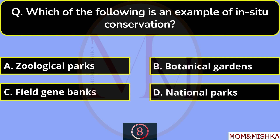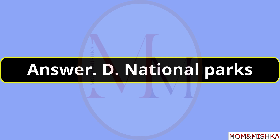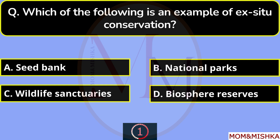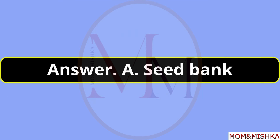Which of the following is an example of in-situ conservation? National Parks, option D. Which of the following is an example of ex-situ conservation? Seed bank, option A.